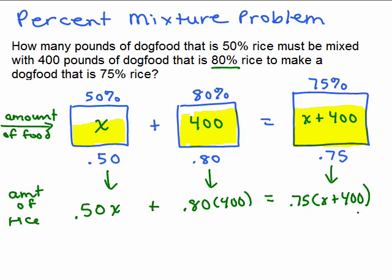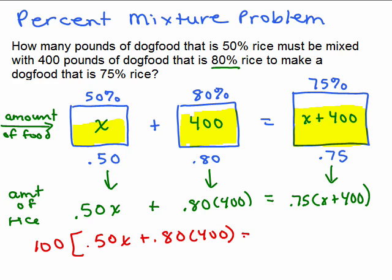The next step is to solve this equation. You can solve it by working with the decimals throughout using a calculator. I like to multiply both sides of the equation by 100 to eliminate all of the decimals. Since 0.75 has two decimal places, I'm going to multiply everything by 100 — multiplying 100 on the left side and 100 on the right side.